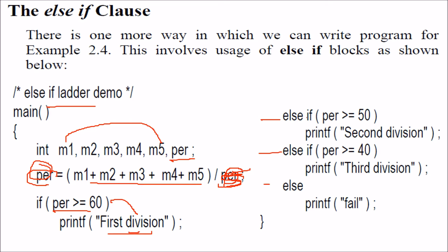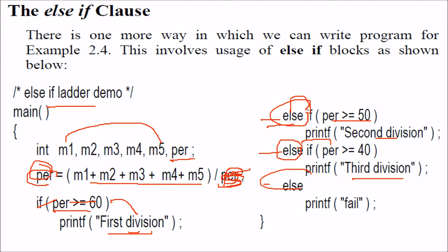So, if this is the condition we print 1st division, else if percentage greater than 50, 2nd division. Else if percentage greater than or equal to 40, 3rd division. So, if this condition fails, it goes to this else. If these both conditions fail, it goes to this. Otherwise, if all three conditions fail, we are going to fail.